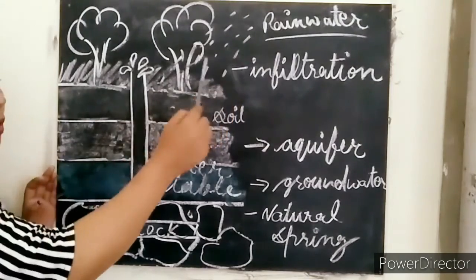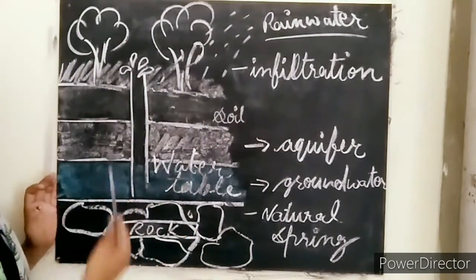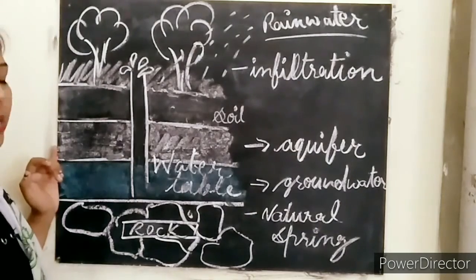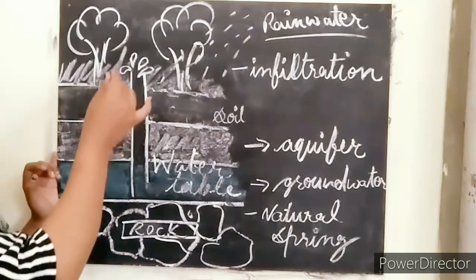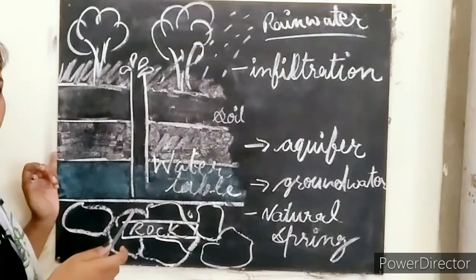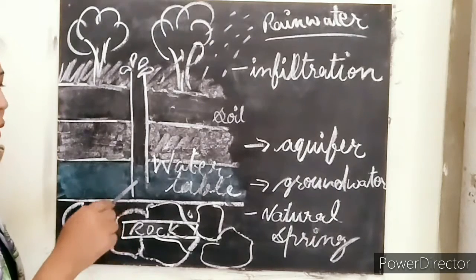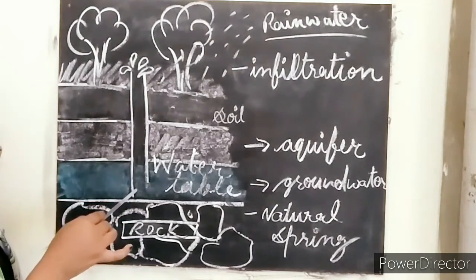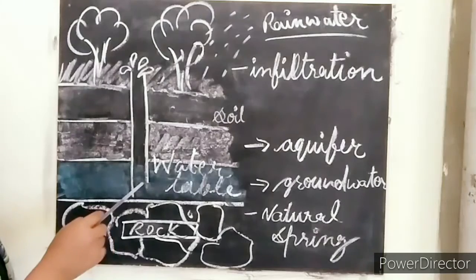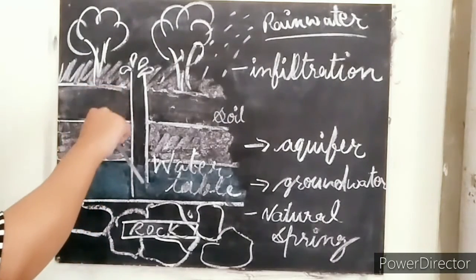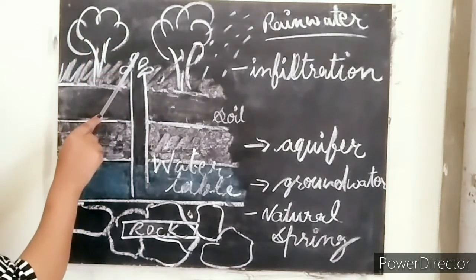Rainwater that falls on soil goes deep down into the ground, becoming groundwater. The process by which rainwater seeps deep into the ground is known as infiltration. For example, when digging a deep hole for a hand pump, you go down until you reach the water level, then stop. The groundwater passes through all the layers and is then drawn out by the hand pump.